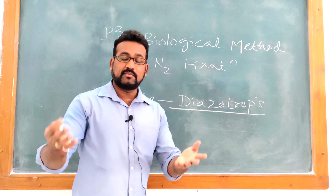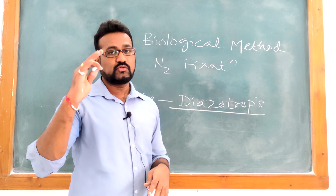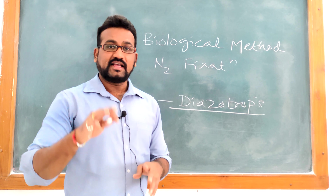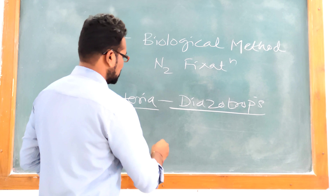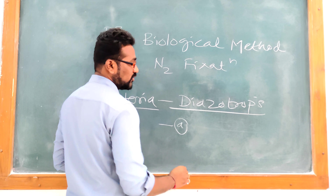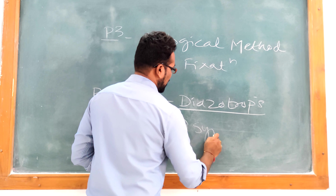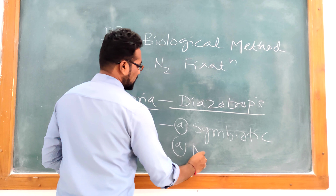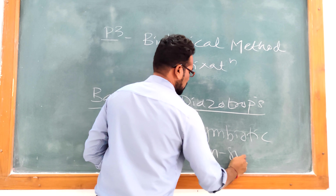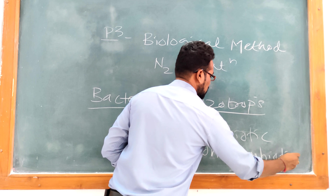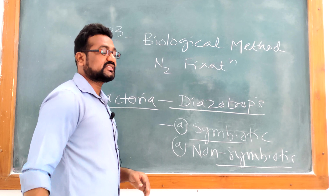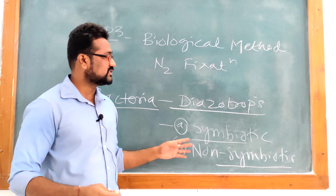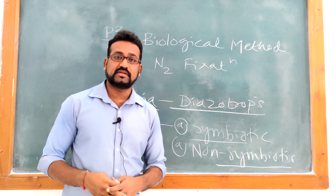These bacteria - I am talking about properties of these diazotrophs - are unicellular prokaryotic in nature. These are soil-borne microorganisms. These diazotrophs show two types of association or two types of fashion of growth: one is symbiotic, and another is non-symbiotic. We will discuss one by one how symbiotic and non-symbiotic biological methods of Nitrogen fixation take place.